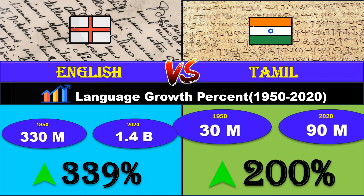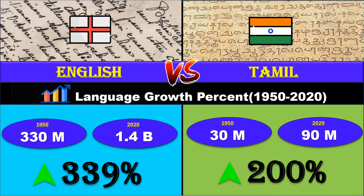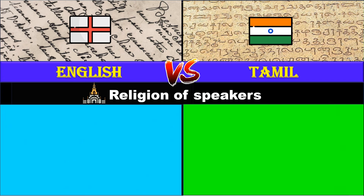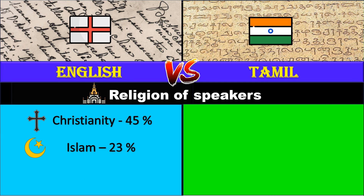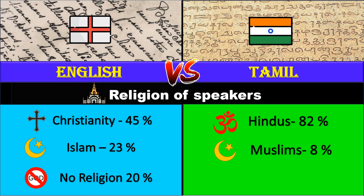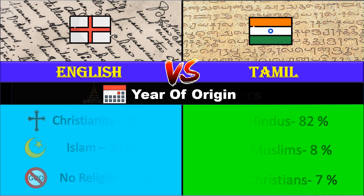Religion of speakers: English speakers are 45 percent Christian, 23 percent Muslim, and 20 percent non-religious. Tamil speakers are mostly Hindu, making up 82 percent, followed by Muslims at 8 percent and Christians at 7 percent.